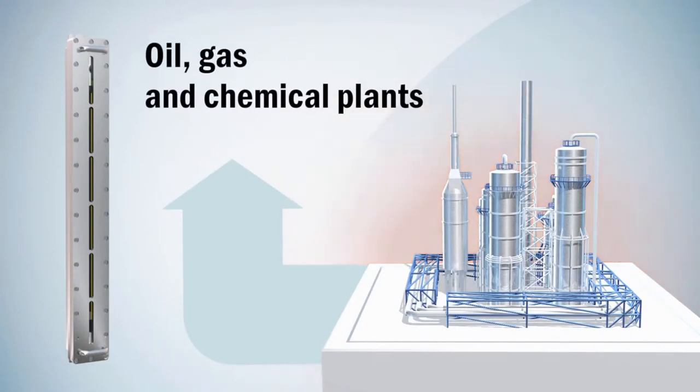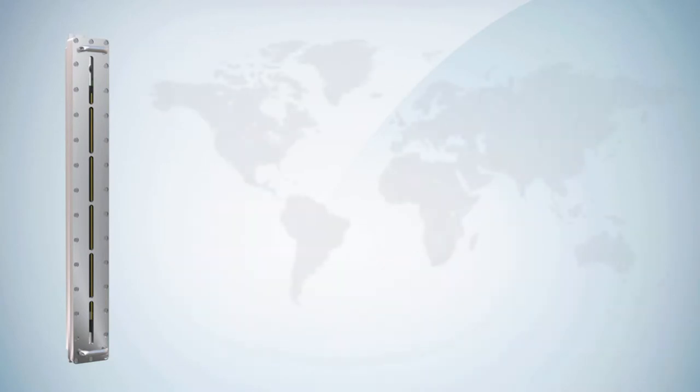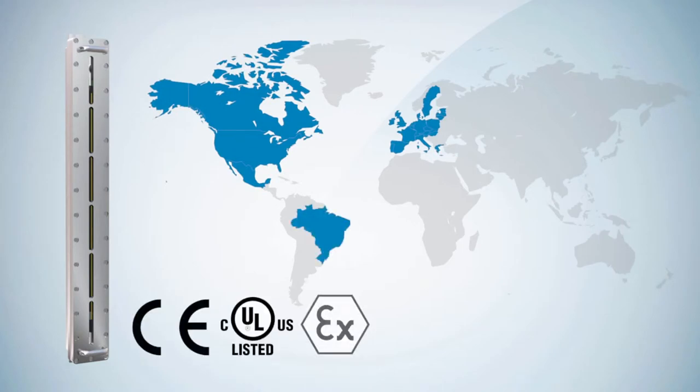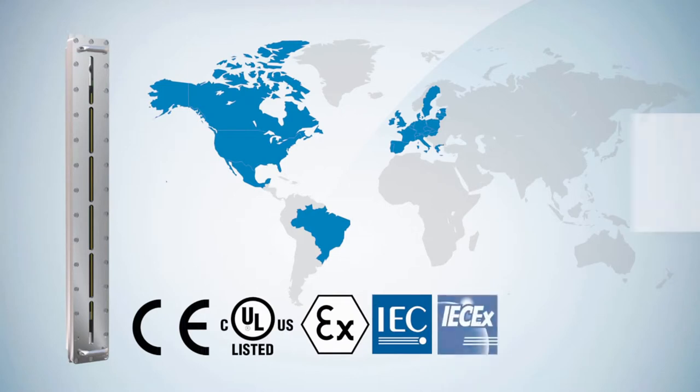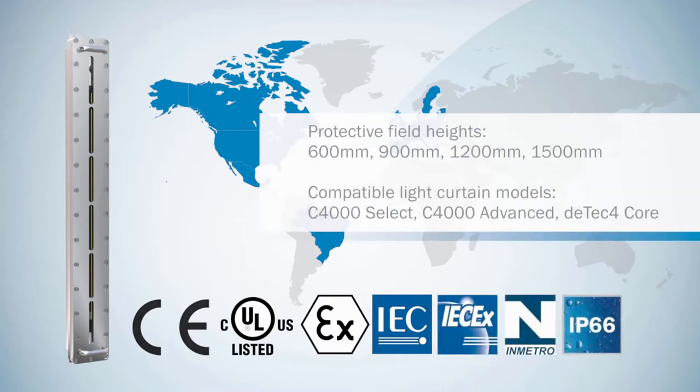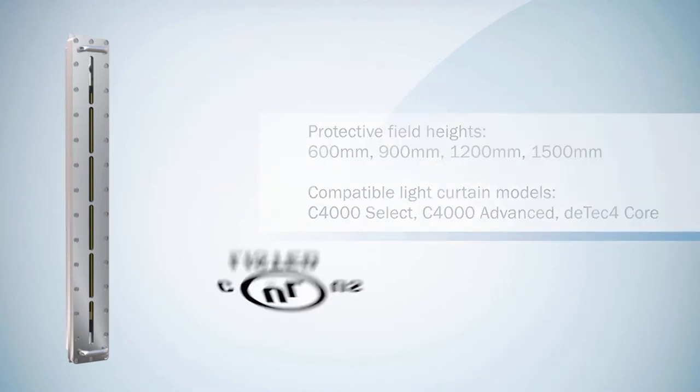SICK explosion proof safety light curtains are suitable for use in Europe, North America, and Brazil thanks to certifications from UL, ATEX, IECex, and Inmetro. With a unique UL listed certification, SICK is the first on the market to offer a safety light curtain that is rated for use in hazardous locations.